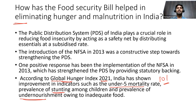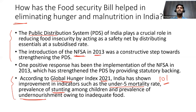The main achievement of NFSA 2013 is that it provided statutory backing to our Public Distribution System. India already runs the world's largest food security program through PDS, and NFSA further strengthened it by making access to food grains a right for individuals, especially BPL families, who can get food grains from PDS outlets and ration shops.